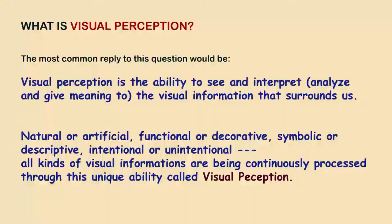The most common reply to the question 'what is visual perception?' would be: visual perception is the ability to see and interpret — that is, analyze and give meaning to — the visual information that surrounds us. This is a very simple definition and you get this kind of definition almost everywhere, in any book or website on visual perception.